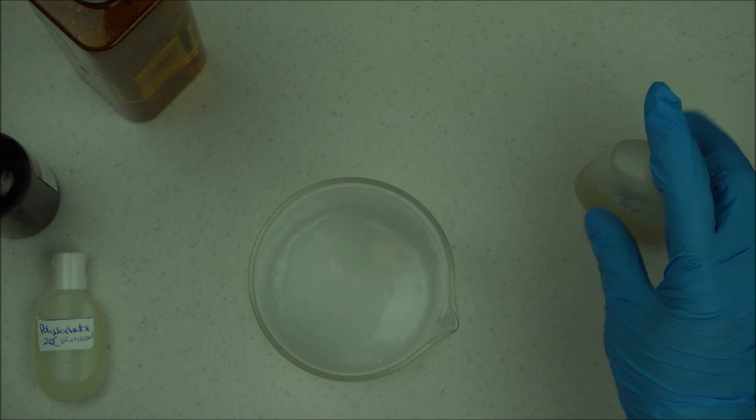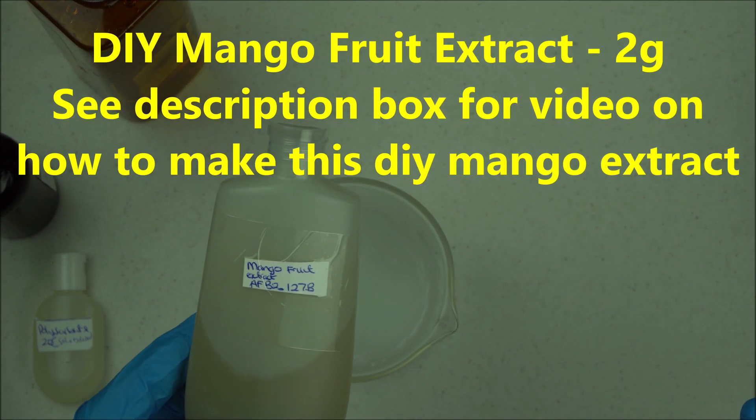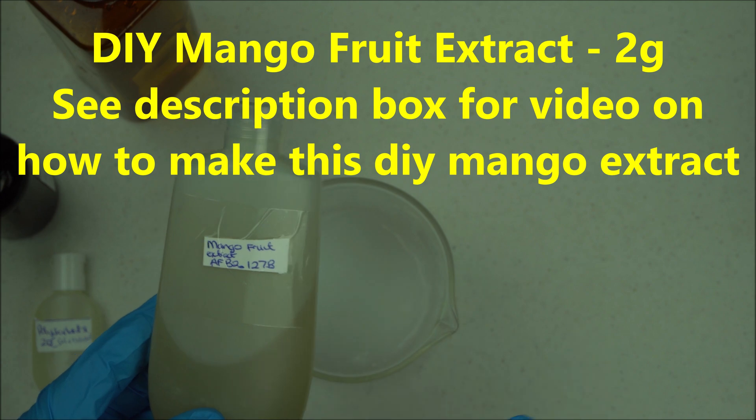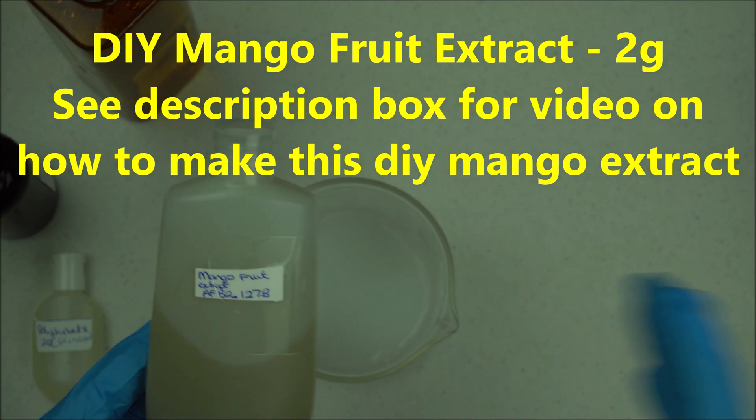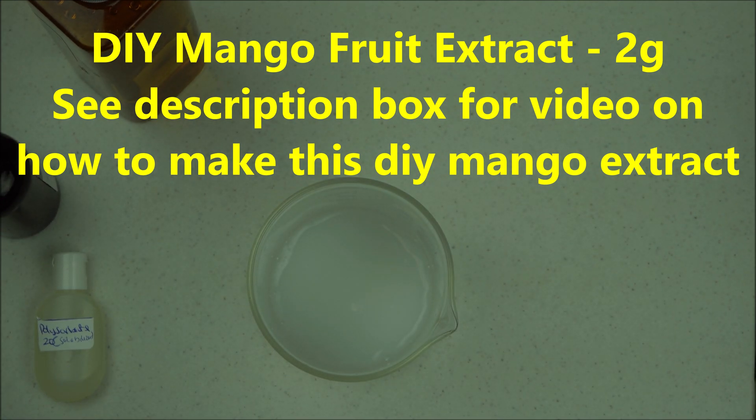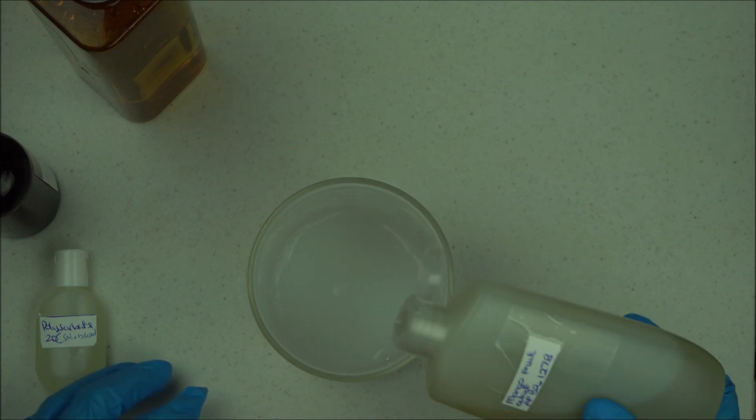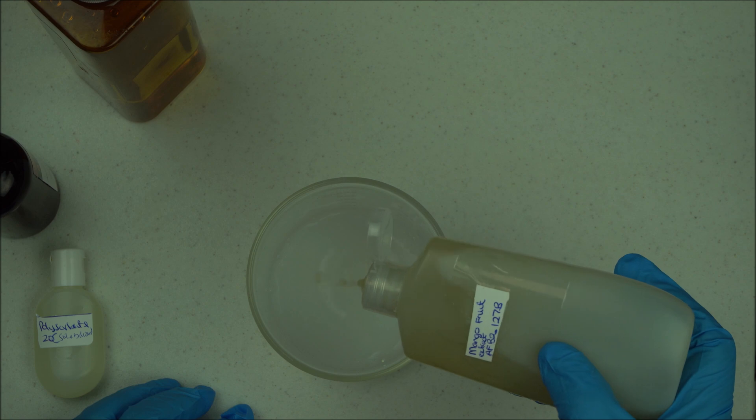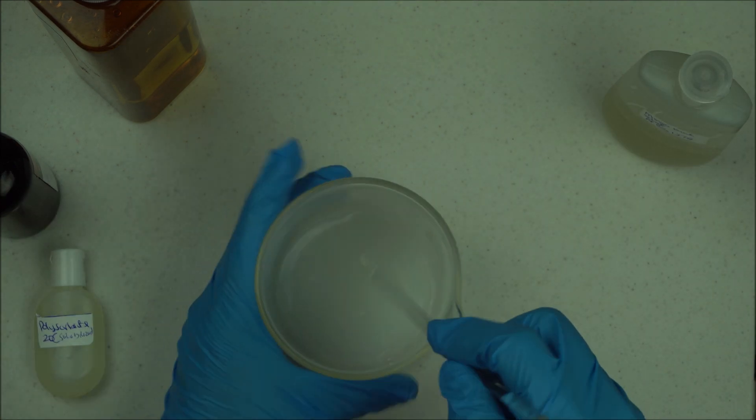Now we're going to add our DIY mango fruit extract. You can use any extract of your choice depending on your skin type—chamomile, calendula extract, depending on your skin type. We are going to add 2 grams of the extract. See the description box below for a video where I showed you how to make this extract. Add 2 grams of mango fruit extract and mix it well.